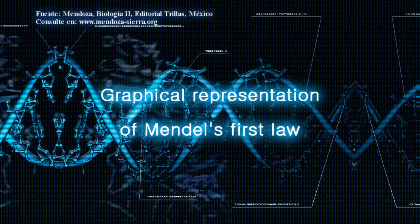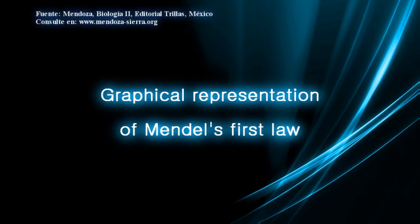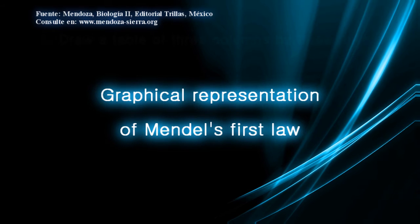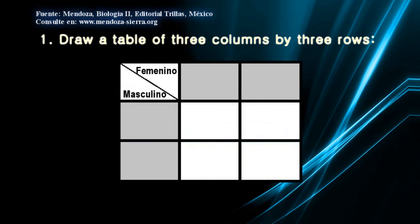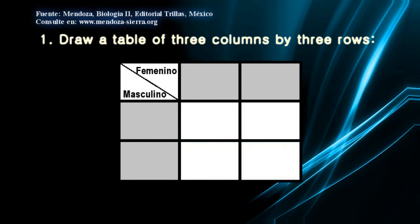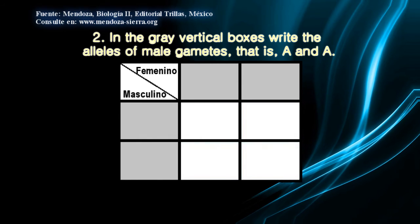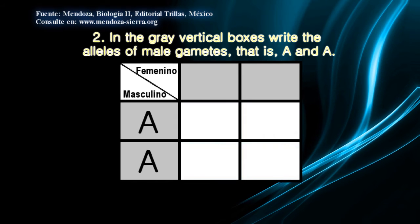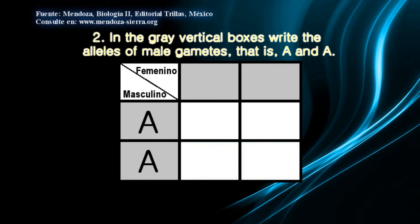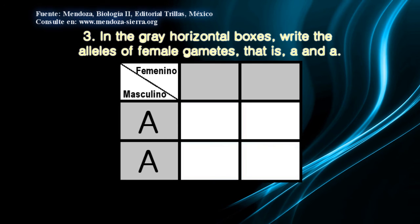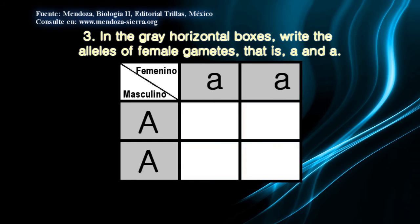Graphical representations of Mendel's first law: Mendel's first law can be represented graphically in a Punnett square as follows. Step 1: Draw a table of three columns by three rows. Step 2: In the gray vertical boxes, write the alleles of male gametes — that is, uppercase A and uppercase A. Step 3: In the gray horizontal boxes, write the alleles of female gametes — that is, lowercase a and lowercase a.